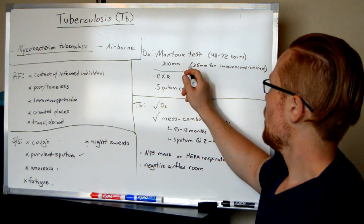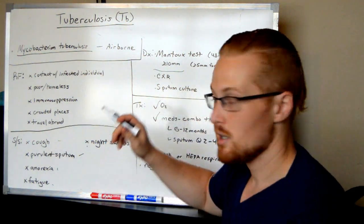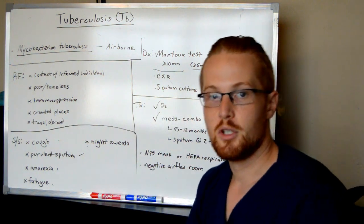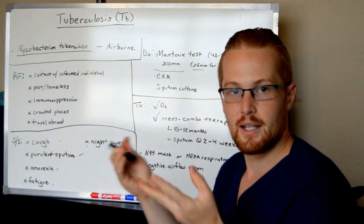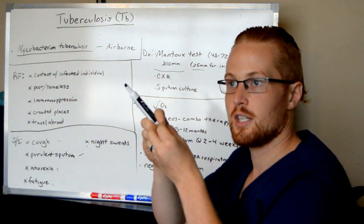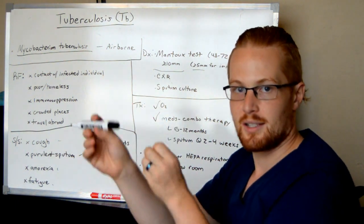It is positive, it's greater than 10 millimeters or if you're immunocompromised, greater than five because if you're immunocompromised, you have a decreased response to fighting infection. So it will take you longer to get that response and that swelling.